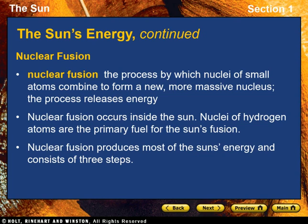A powerful atomic process known as nuclear fusion occurs inside the sun. Nuclear fusion is the process of combining nuclei of small atoms to form more massive nuclei. Fusion releases huge amounts of energy, and nuclei of hydrogen atoms are the primary fuel for the sun's fusion.